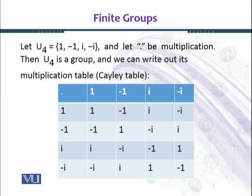The operation is multiplication. You can see that 1 is the multiplicative identity because 1 is the multiplicative identity of complex numbers. We have four complex numbers: 1, -1, iota, -iota. 1×1=1, 1×(-1)=-1, 1×iota=iota, 1×(-iota)=-iota.